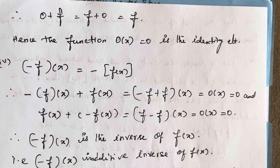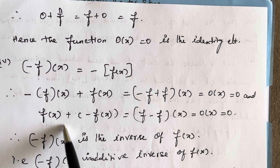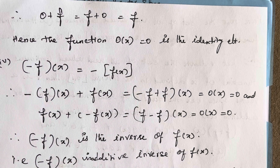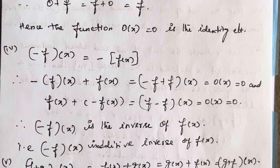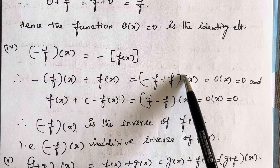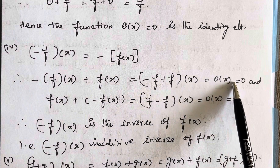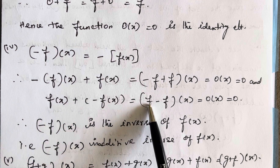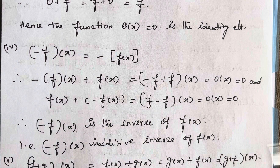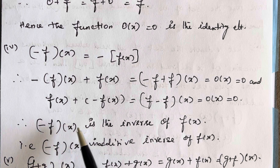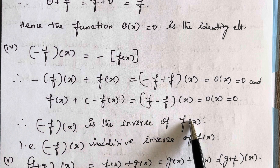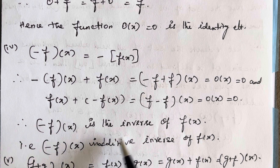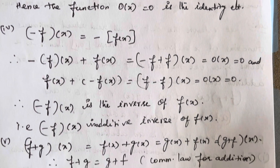Next, the inverse element. We note that (-f)(x) = -f(x). If we add -f(x) with f(x), we get (-f+f)(x) = 0(x) = 0. Similarly, f(x)+(-f(x)) = (f-f)(x) = 0(x) = 0. Therefore, -f(x) is the additive inverse of f(x).